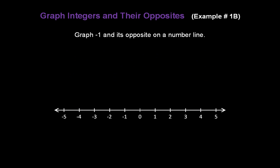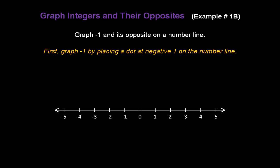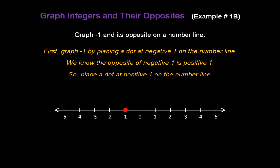Now let's graph negative 1 and its opposite on a number line. First, graph negative 1 by placing a dot at negative 1 on the number line. We know the opposite of negative 1 is positive 1, so we place a dot at positive 1 on the number line to complete our graph.